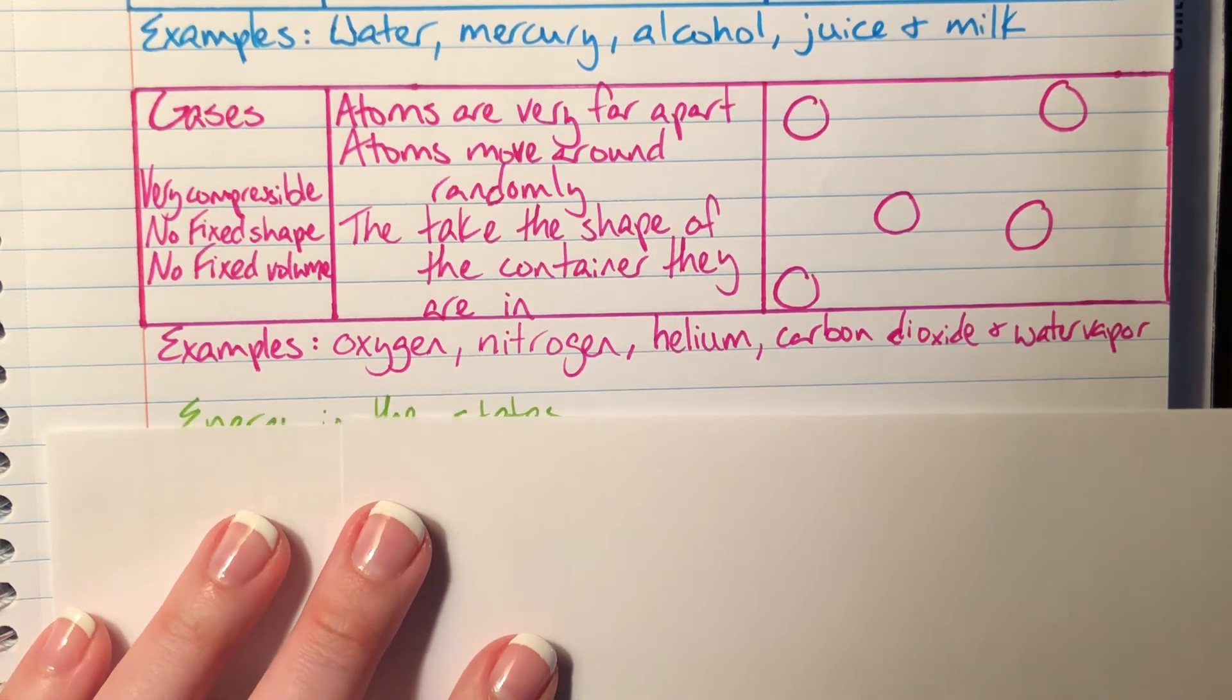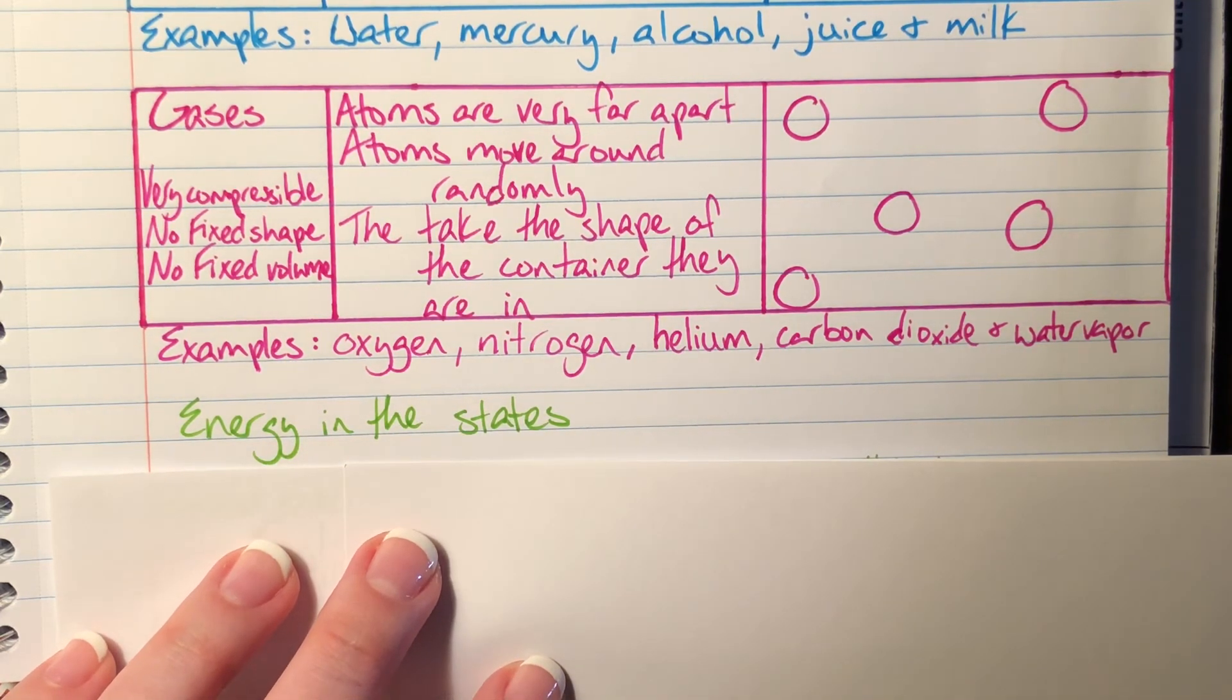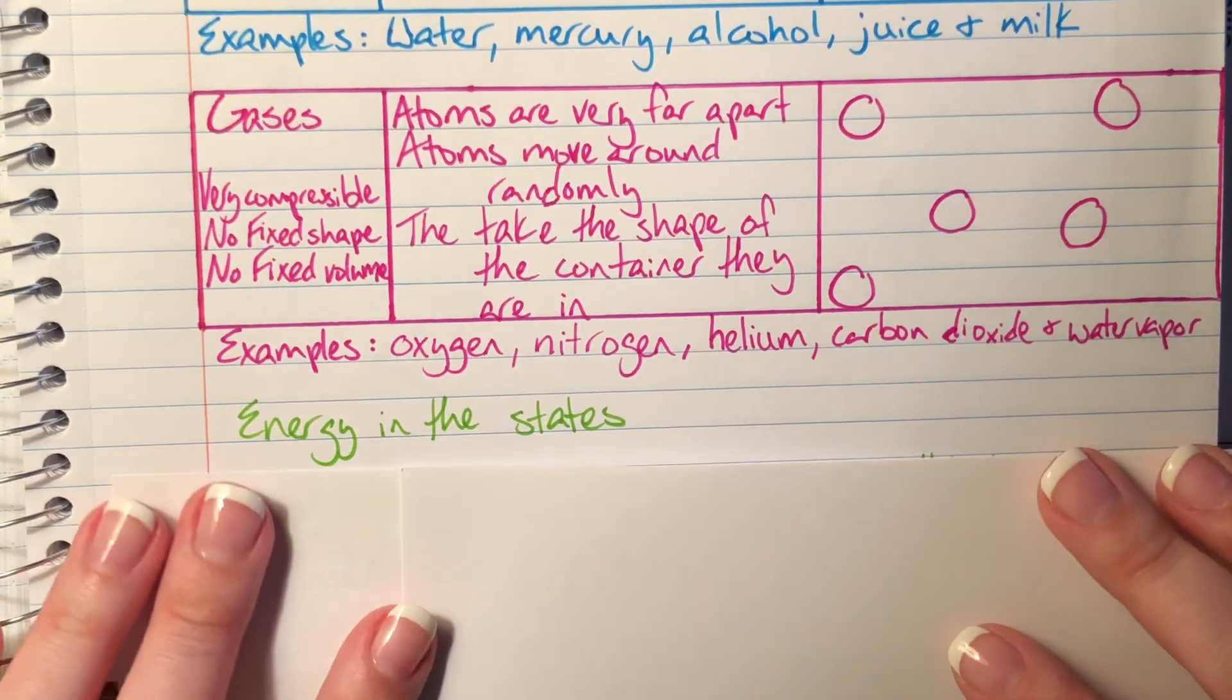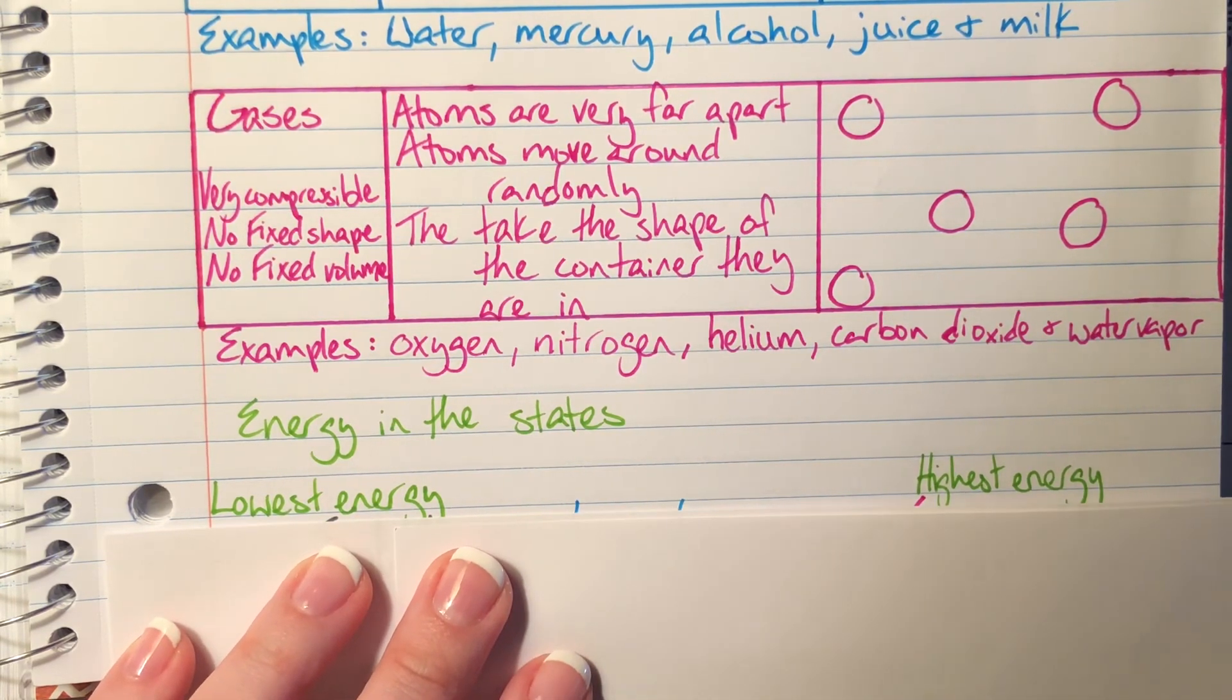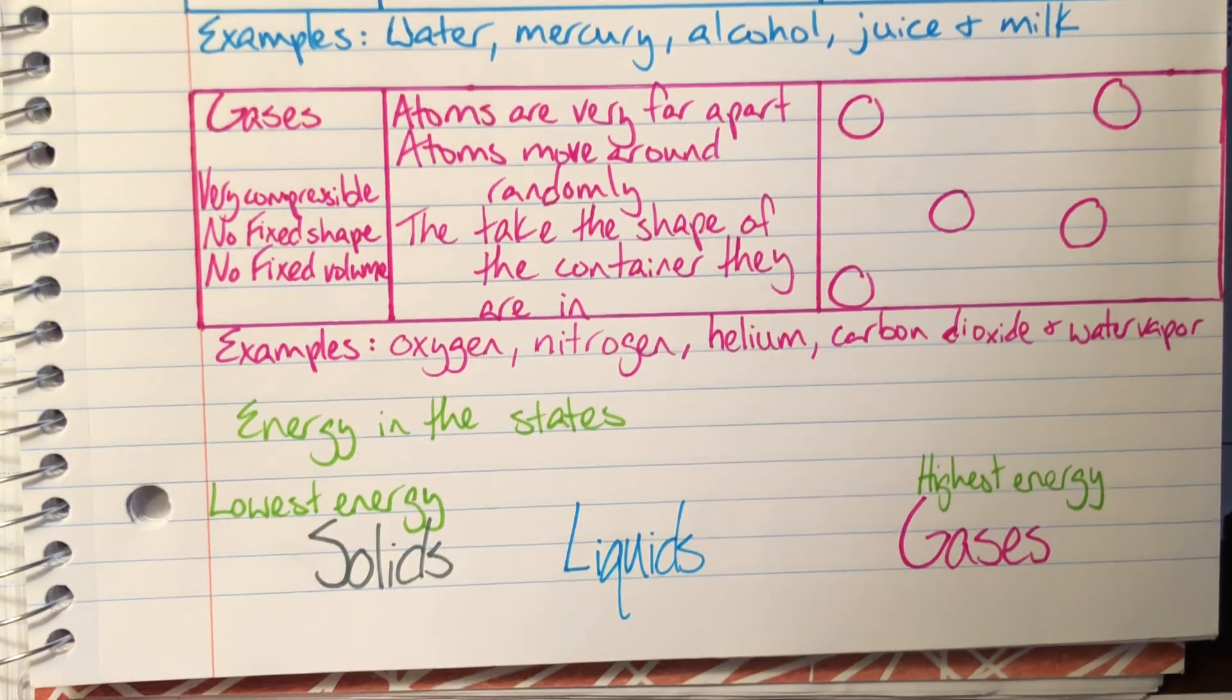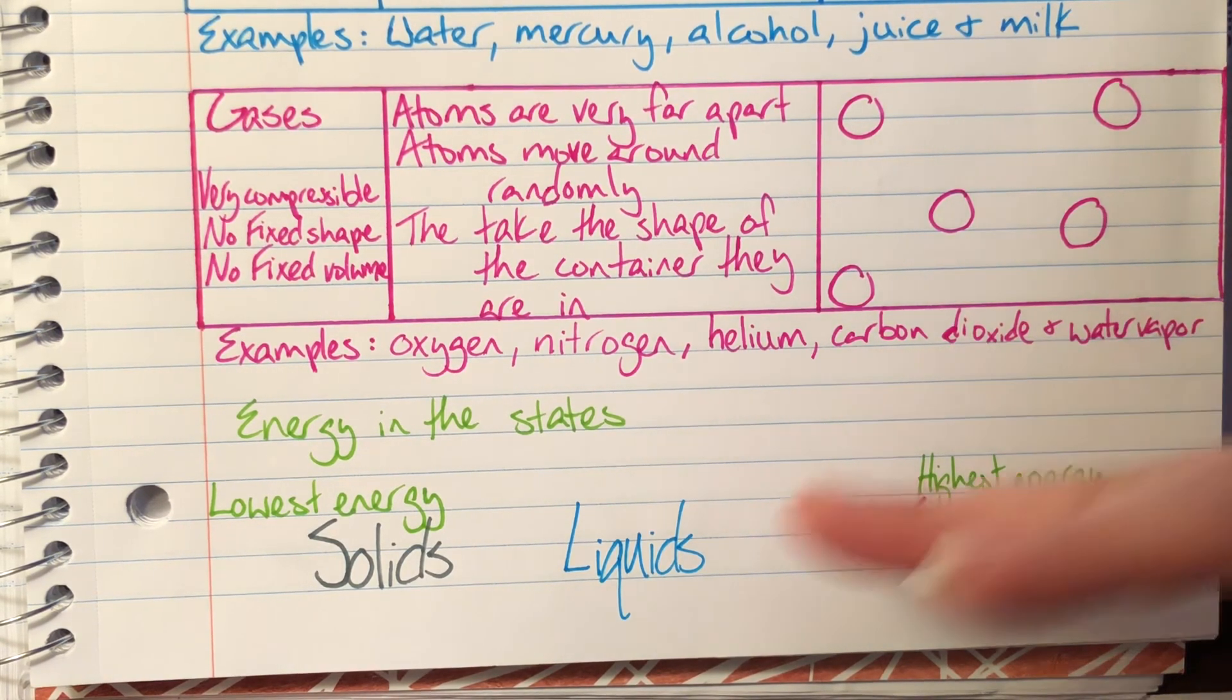The last thing that we need to talk about for our states of matter are the relative energy levels for each state of matter. We are going to list them from lowest energy to highest energy. In that order we have solids at our bottom. They are our least energetic state. They don't have the room to be energetic and so they kind of just slump in and fall into line.